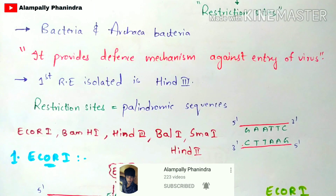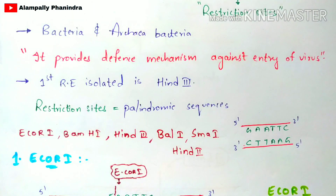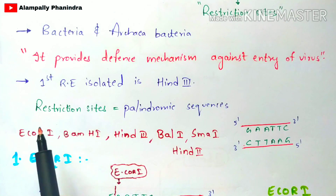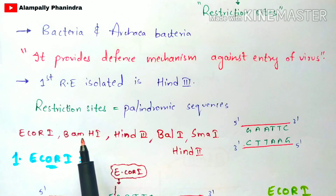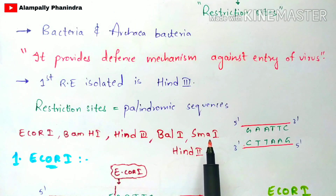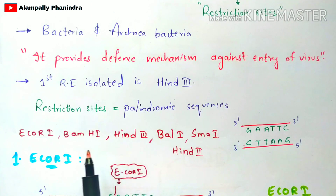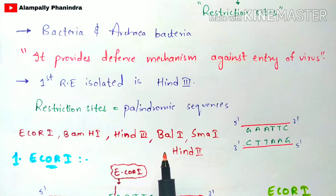There are many types of restriction endonuclease enzymes. Among them, some of the most important ones for our study are EcoRI, BamHI, HindIII, HindII, BalI, and SmaI. These are some of the most important restriction endonuclease enzymes which you have to know.